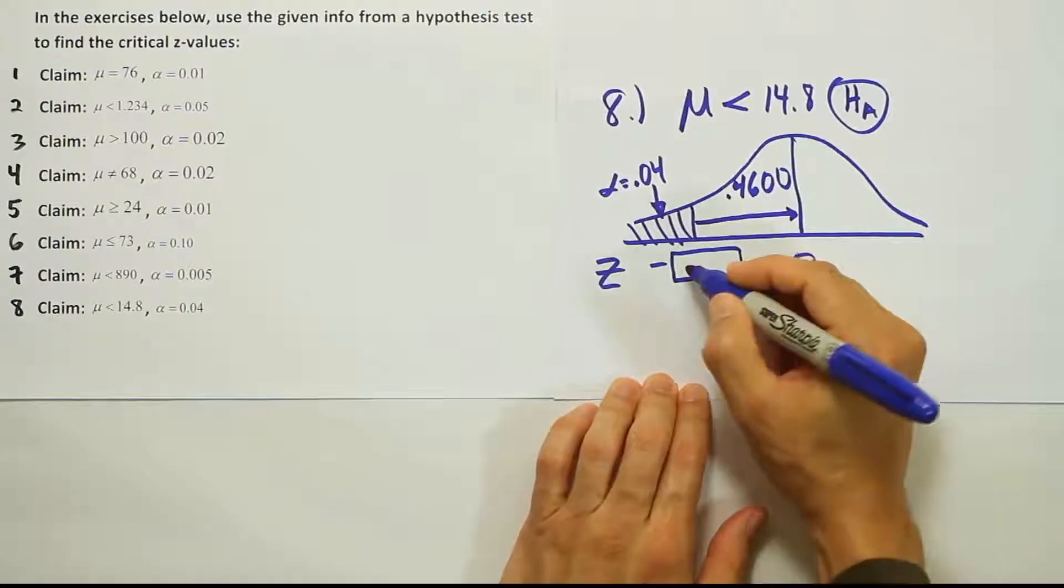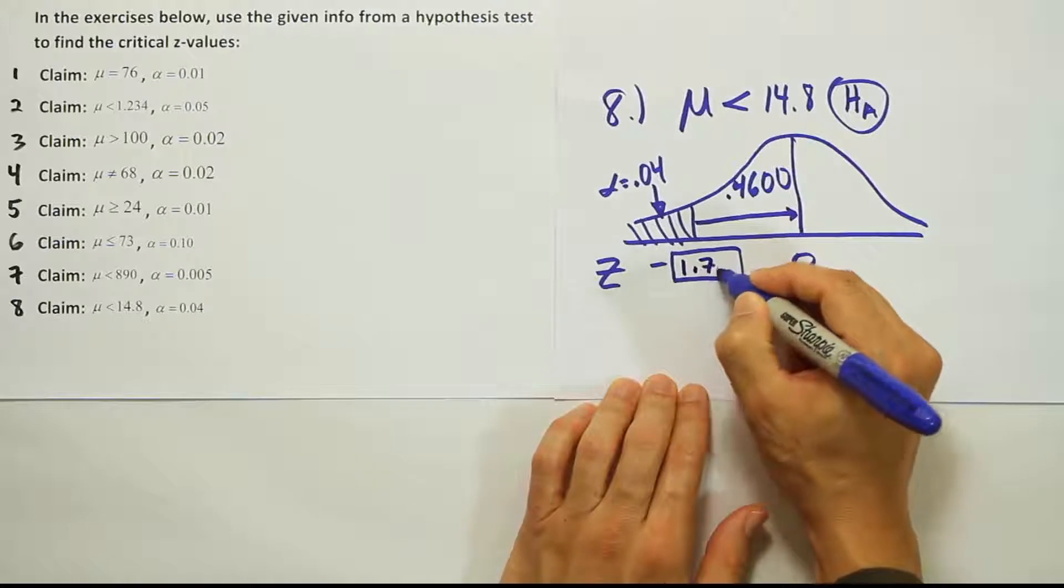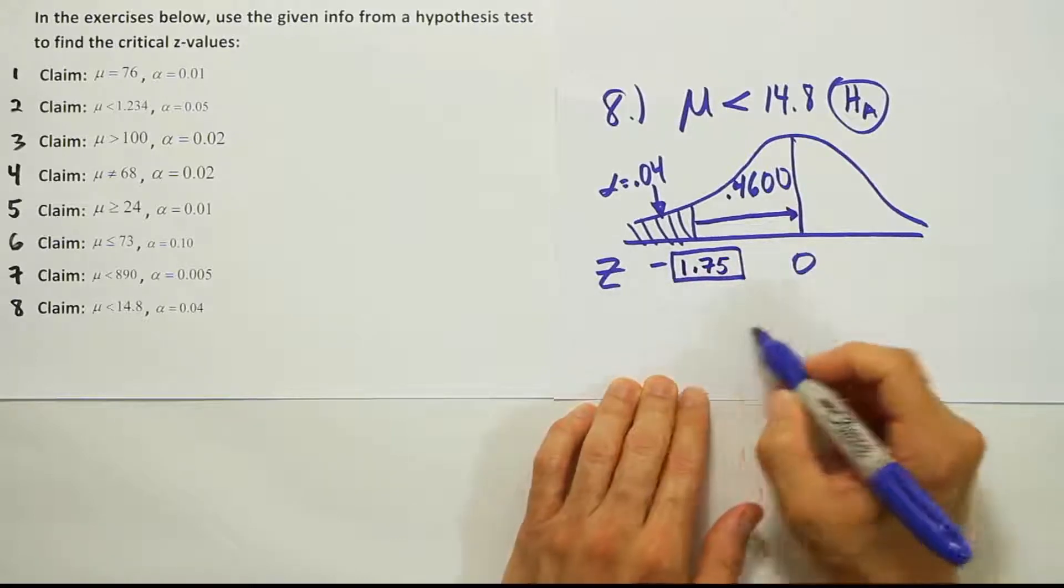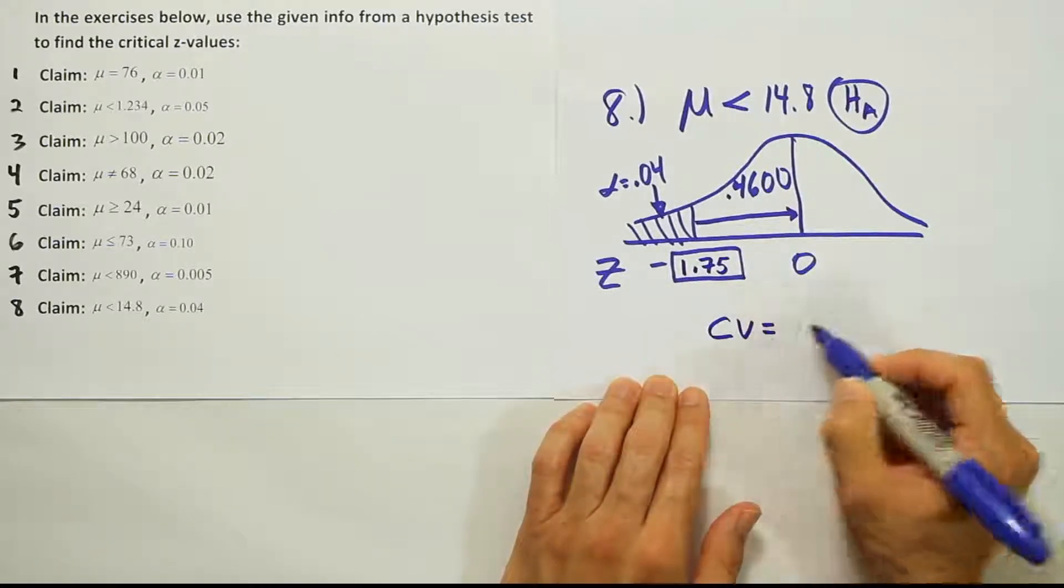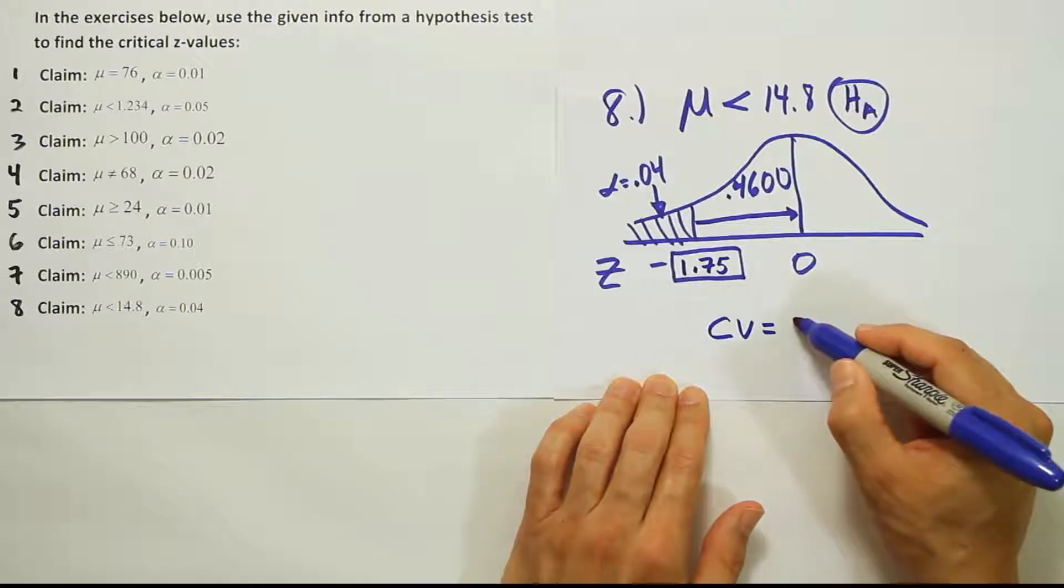Okay, so we found the answer 1.75. So the answer is negative 1.75. And that's our eighth and final critical value that we found.